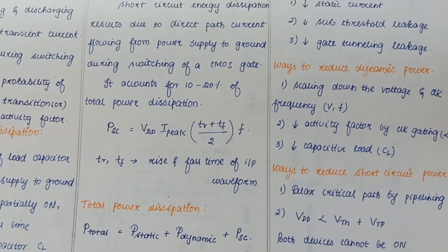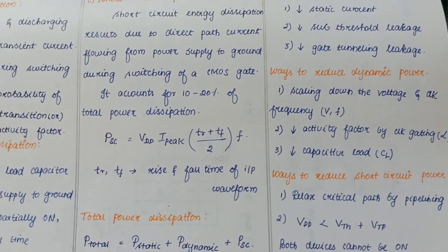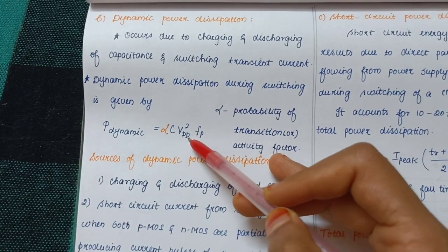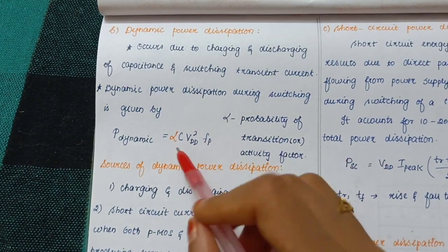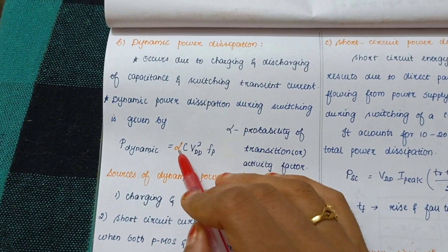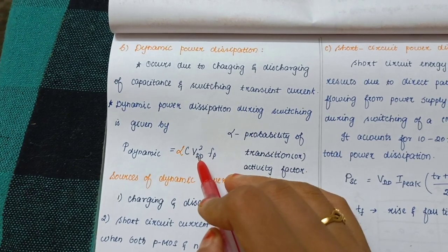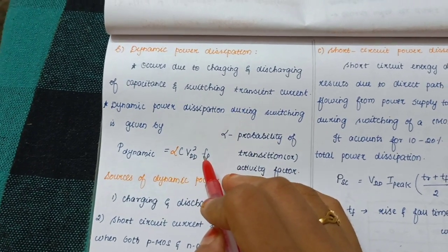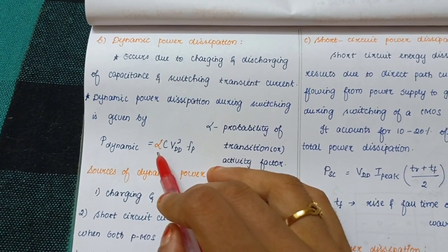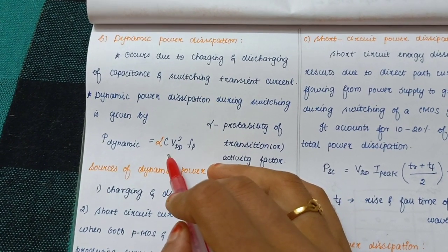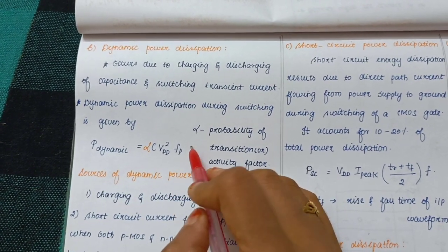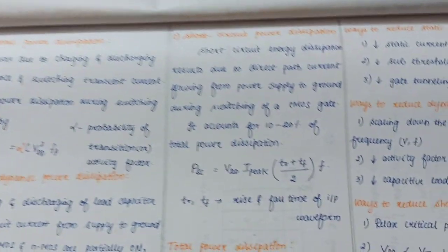To reduce dynamic power, we know the expression is Alpha C VDD square into F. Dynamic power is proportional to Alpha, C, VDD, and F. We have to reduce activity factor, reduce capacitance load value, reduce supply voltage, and reduce frequency by scaling down.